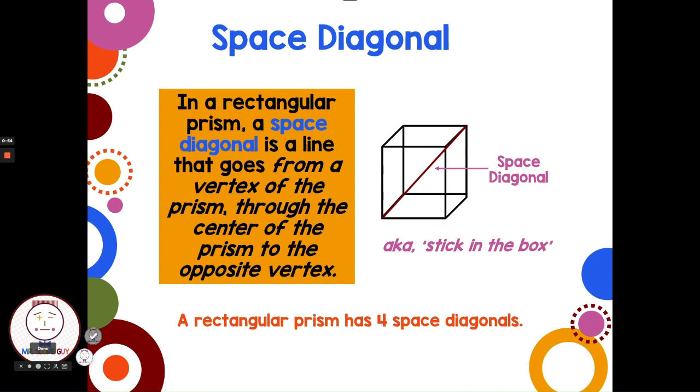A rectangular prism has four of these space diagonals and we could use the Pythagorean theorem to find the length of this. So let's look at what a problem like that would look like.